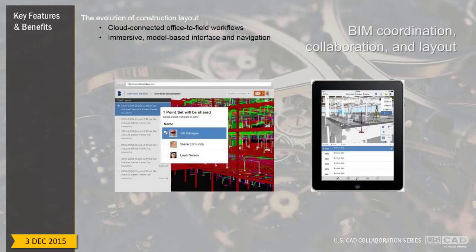Looking at the key features and benefits of Glue: first is cloud-connected office-to-field workflows — and also office-to-office. The main takeaway is connecting data across all disciplines and all players. It can be used during design as well, especially with model navigation and clash detective tools. It's really easy to use, with a simple user interface accessible to the entire team.